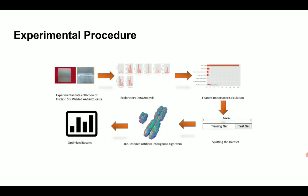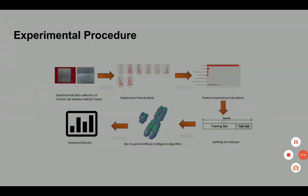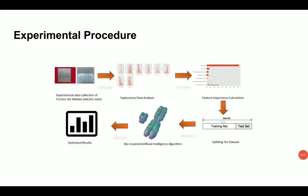This is the experimental procedure used in our present work. First, we collected the dataset, then performed exploratory data analysis, then calculated the feature importance. We split the dataset into two parts: testing and training, divided in an 80-20 ratio.